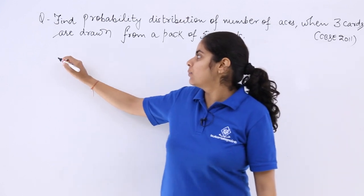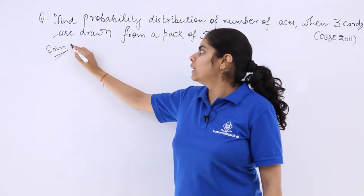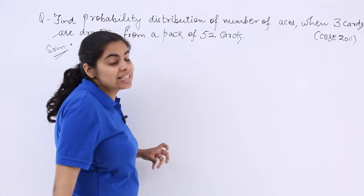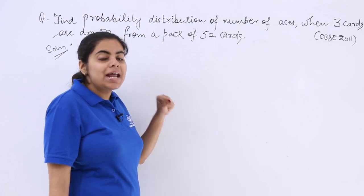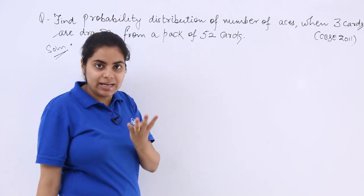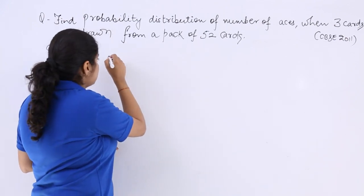So let's see how to do it. So this time it is different from the previous question. You have not been given the probability distribution; rather you have to frame it yourself. So see how many aces are usually there and how many cards you have to draw out. Aces usually are four, right? And you have to draw out three cards.